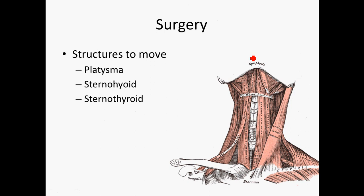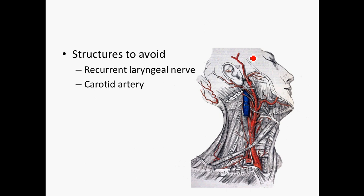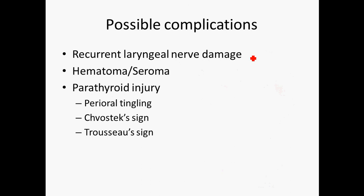The main structures involved in thyroid surgery are the platysma and the sternohyoid or sternothyroid muscles, which need to be moved out of the way. The recurrent laryngeal nerve is close to the thyroid and should be avoided, as should the carotid artery. Damage to these structures can lead to laryngeal nerve damage or hematoma and seroma.